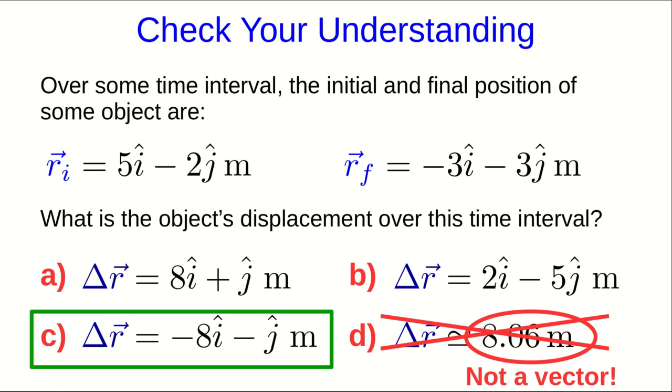The correct answer is C, because we are taking the final minus the initial. So minus 3î hat minus 5 gives minus 8î hat, and minus 3ĵ hat minus minus 2ĵ hat gives minus ĵ hat.